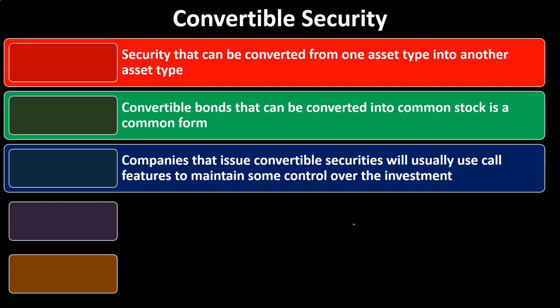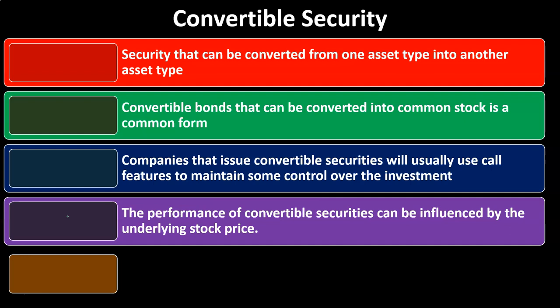Companies that issue convertible securities will usually use call features to maintain some control over the investment. For example, if we have convertible bonds, they might have the convertible feature, and there are benefits to adding it that we'll talk about, as well as benefits to investors — pros and cons on both sides. One of the cons to the corporation is they have no real control over the stock's market price, so they may implement more control by having a call option as well, allowing them to call back the bond at a certain given price.